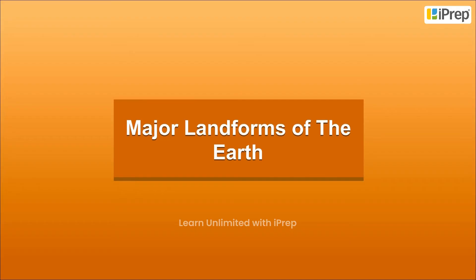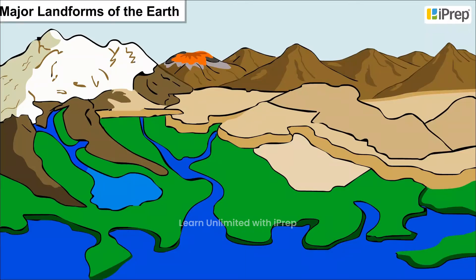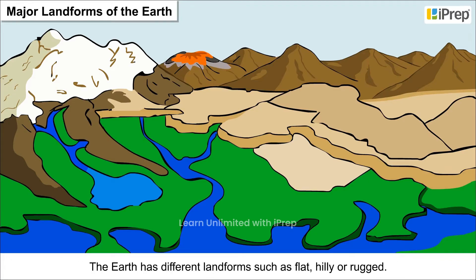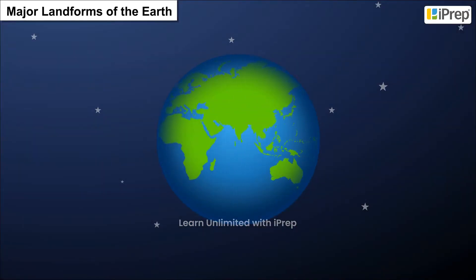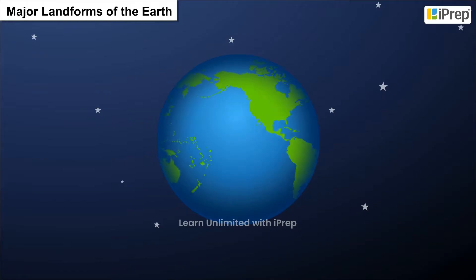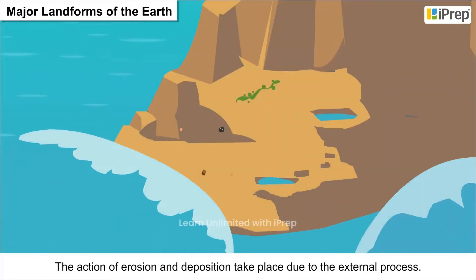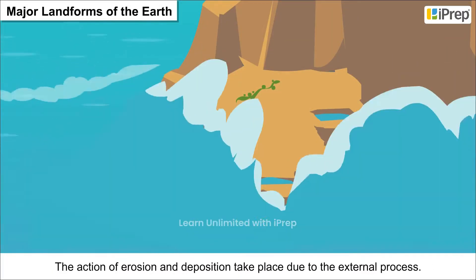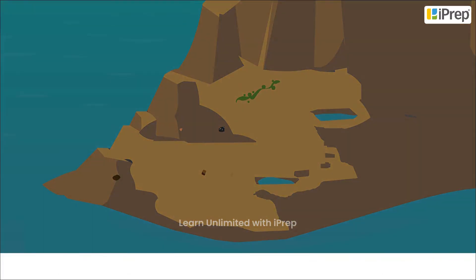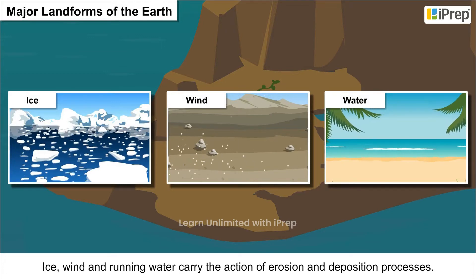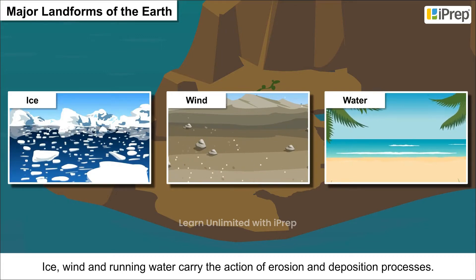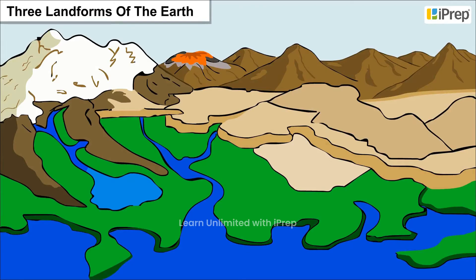Major landforms of the earth. The earth has different landforms such as flat, hilly, or rugged. Our earth is moving continuously due to internal or external processes. The action of erosion and deposition takes place due to external processes. Ice, wind, and running water carry out the action of erosion and deposition.